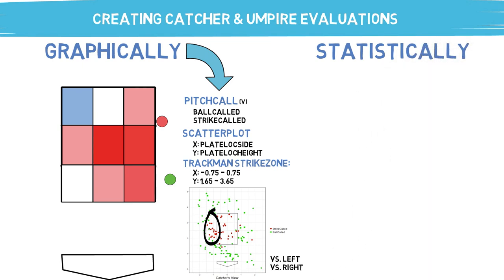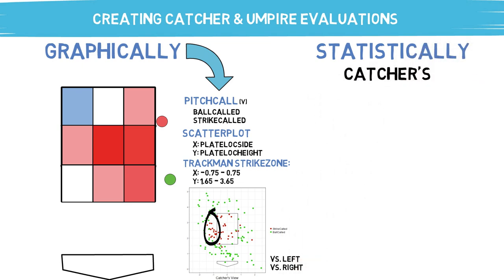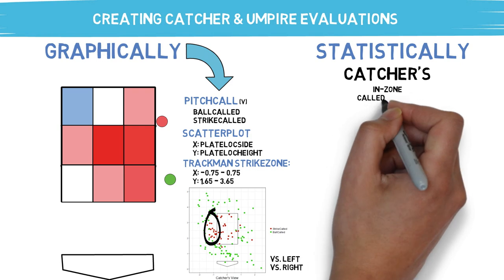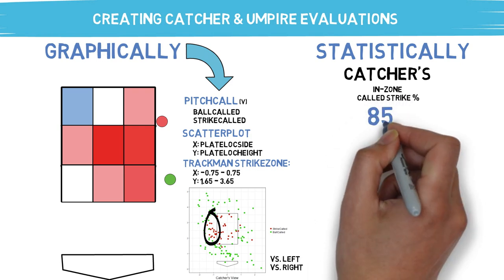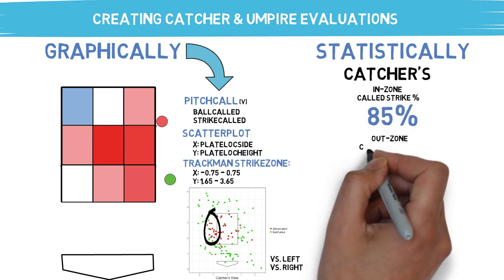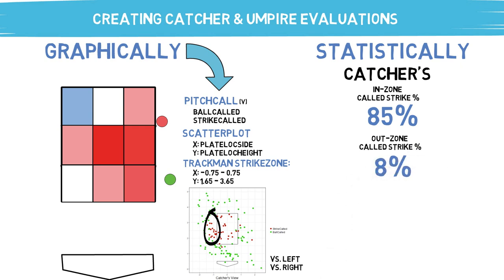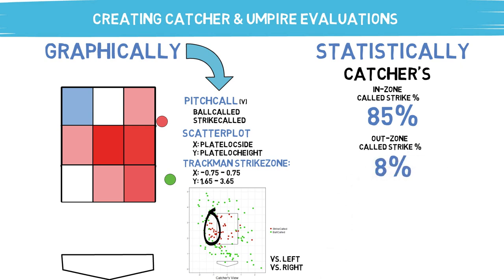The next way you can break this information down, of course, is statistically. For catchers, you can look at things like their in-zone strike percentage to make sure they're getting all of the easy ones, or you can look at their out-of-zone strike percentage to see how many they're stealing. Framing is such an integral part of today's game, and so many programs out there focus on improving it, but with this kind of information you can provide statistical evidence to see how players can improve over time.